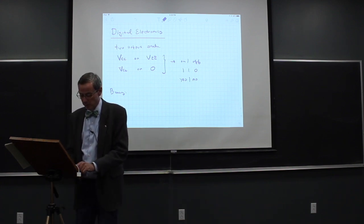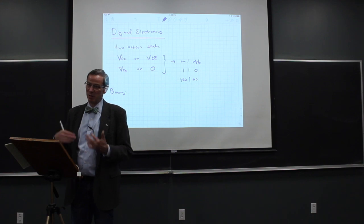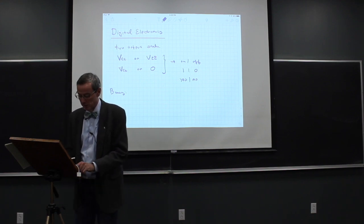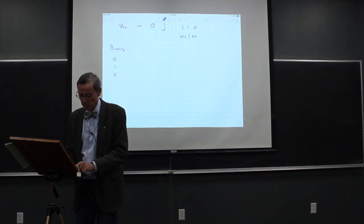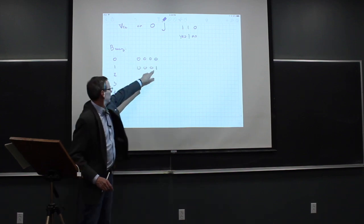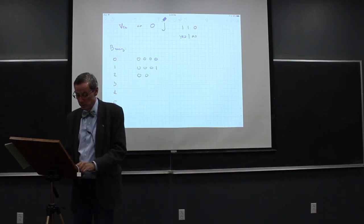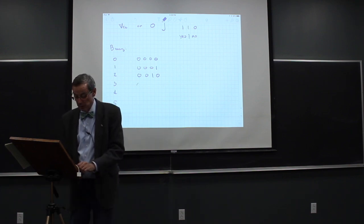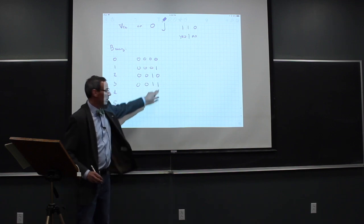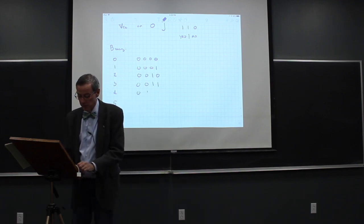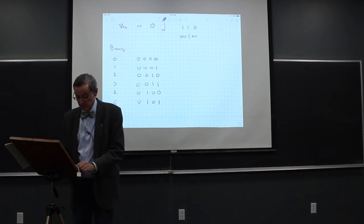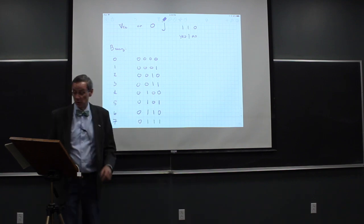In binary, we roll over at two, so we go zero, one, and then one-zero, one-one, and keep going. So in binary: zero is 0, one is 1, two is 0-1-0 (a two and no ones), three is one-one (a two and a one), four is one-zero-zero (a four, no twos, no ones), five is one-zero-one (four and a one), six is one-one-zero (four and a two), and seven is one-one-one.